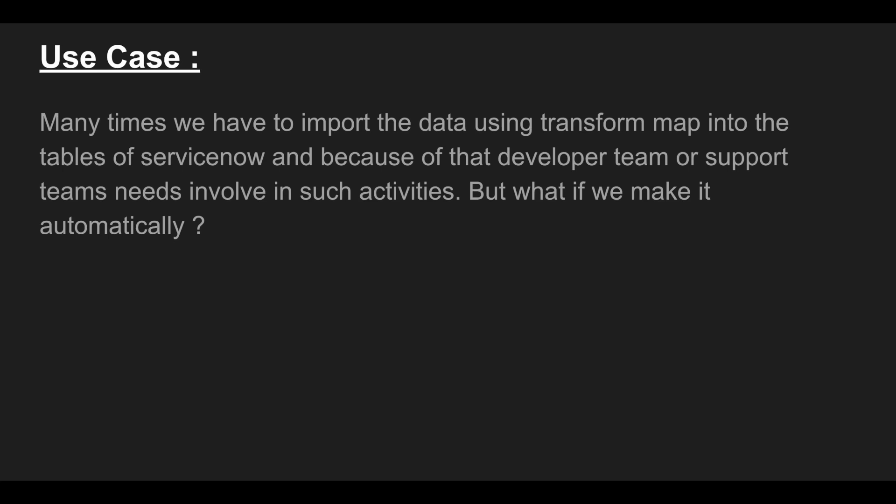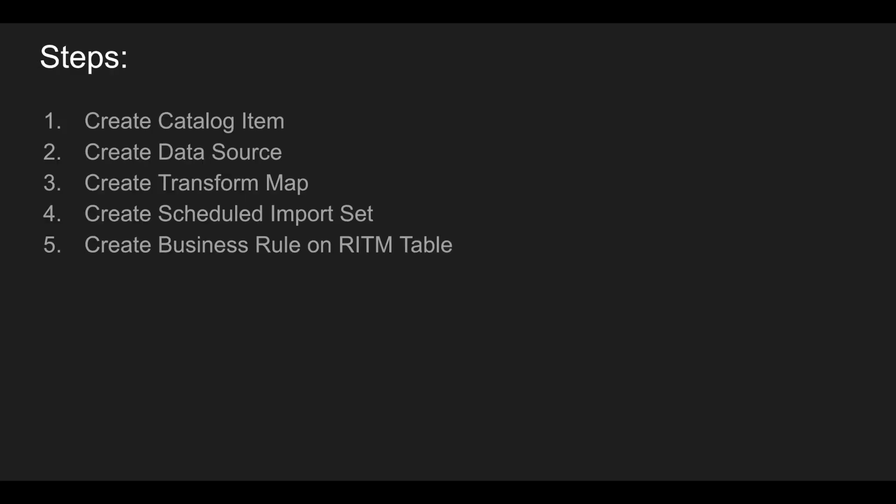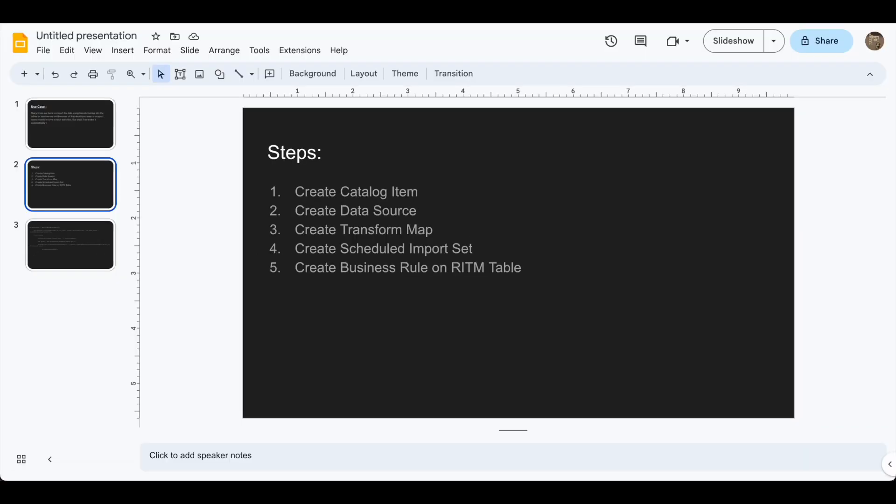What exactly we can do is: first, we will create one catalog item. After that, we are going to create one data source and the transform map, and we will create the scheduled import set for that particular data source. Then we will create one business rule on the RITM table that will copy that particular attachment from the RITM into the data source we created. In that way, it will automatically import the data into that particular table in ServiceNow.